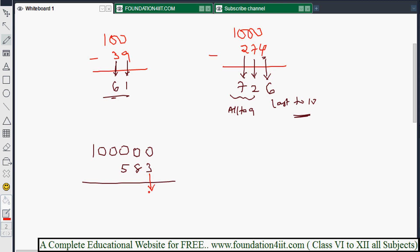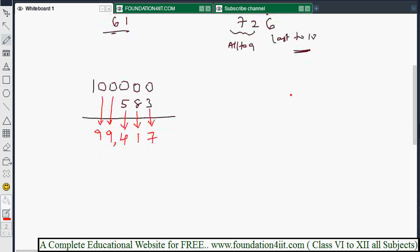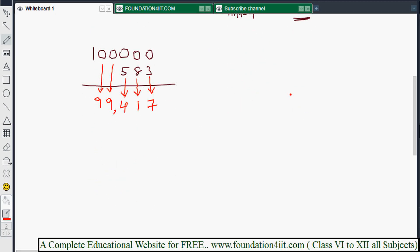3 plus 7 is 10. Now remaining all to 9. 8 to 9 is 1, 5 to 9 is 4. These two zeros also become 9s. Remaining zeros stay as is. So the answer is 99,417.